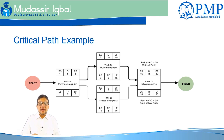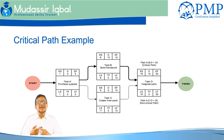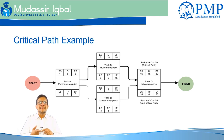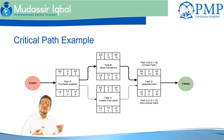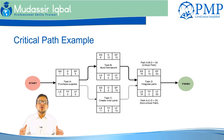You can also use the critical path to determine the earliest date the project may be completed. There can be more than one critical path in a project, and it is possible for the critical path to change as the project proceeds. Importantly, the critical path does not identify all critical activities — it only defines the duration and completion date. There may be very key activities happening in parallel on which the success of the project actually depends.